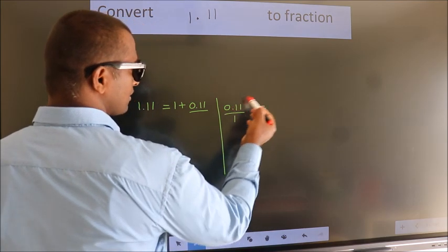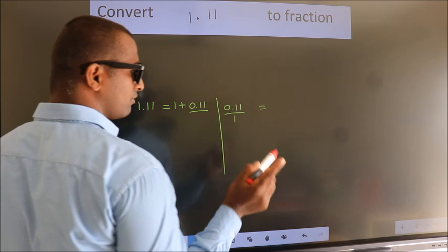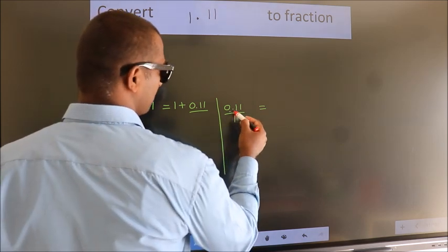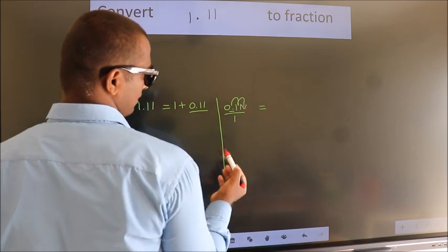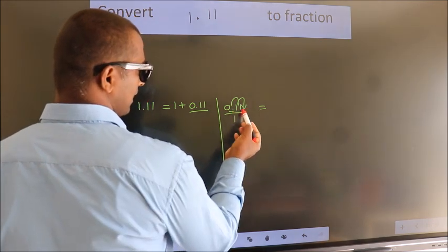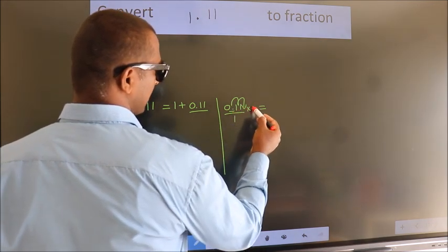To convert this to fraction, we have to move this decimal after 2 numbers. To move this decimal after 2 numbers, we should multiply it with 100.